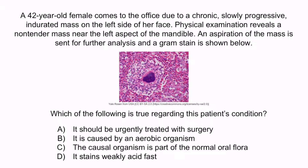A is wrong because surgery is likely not urgently indicated — remember, the treatment for Actinomyces is penicillin. A prolonged course of penicillin is indicated, and if this fails or the case becomes more complicated, then surgery may be considered. B is wrong because Actinomyces is an anaerobic organism. D is wrong because Actinomyces does not stain weakly acid fast — Nocardia stains weakly acid fast, and is also a branching filamentous gram-positive organism, so this can sometimes be used as a red herring. The correct answer is C: the causal organism is part of the normal oral flora.